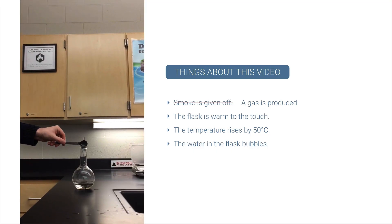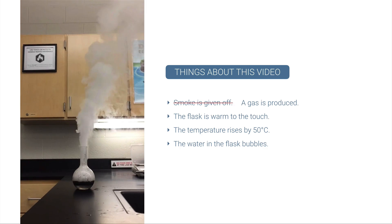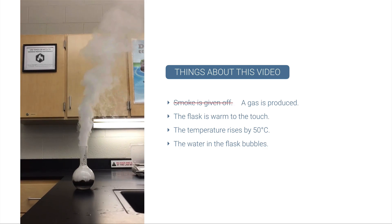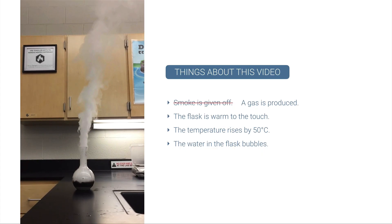The temperature rises by 50 degrees Celsius is an excellent observation. In fact it's a quantitative observation, which is what chemists love. Quantitative observations involve numbers — don't forget — and so taking the temperature, 50 degrees Celsius as a change in temperature, is an excellent observation.